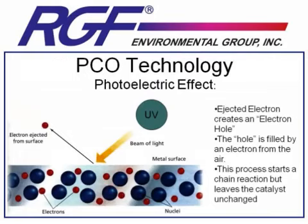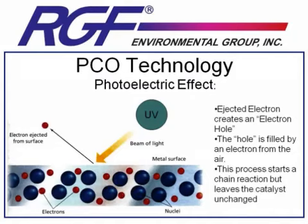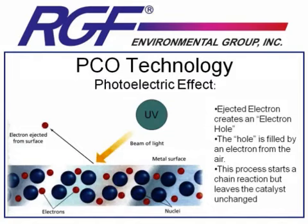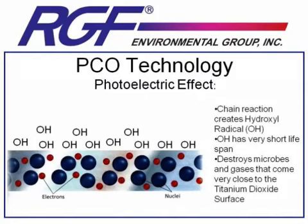Next up, we have PCO technology, or photocatalytic oxidation. This technology was developed in the early 90s and uses a titanium dioxide catalyst with a traditional UV light shining directed UV onto that catalyst. As the titanium dioxide molecules absorb the UV energy, the electrons on them are energized and fly off their outer ring into the surrounding space, creating an electron hole. That hole is filled by electrons from molecules in the air — oxygen, nitrogen, your basic air components — beginning a chain reaction that recombines them into unstable arrangements. PCO devices specifically generate what are called hydroxyl radicals — one oxygen and one hydrogen bonded together — which have a very short lifespan and, because they're so unstable, are able to destroy microbes or gases that come close to them.